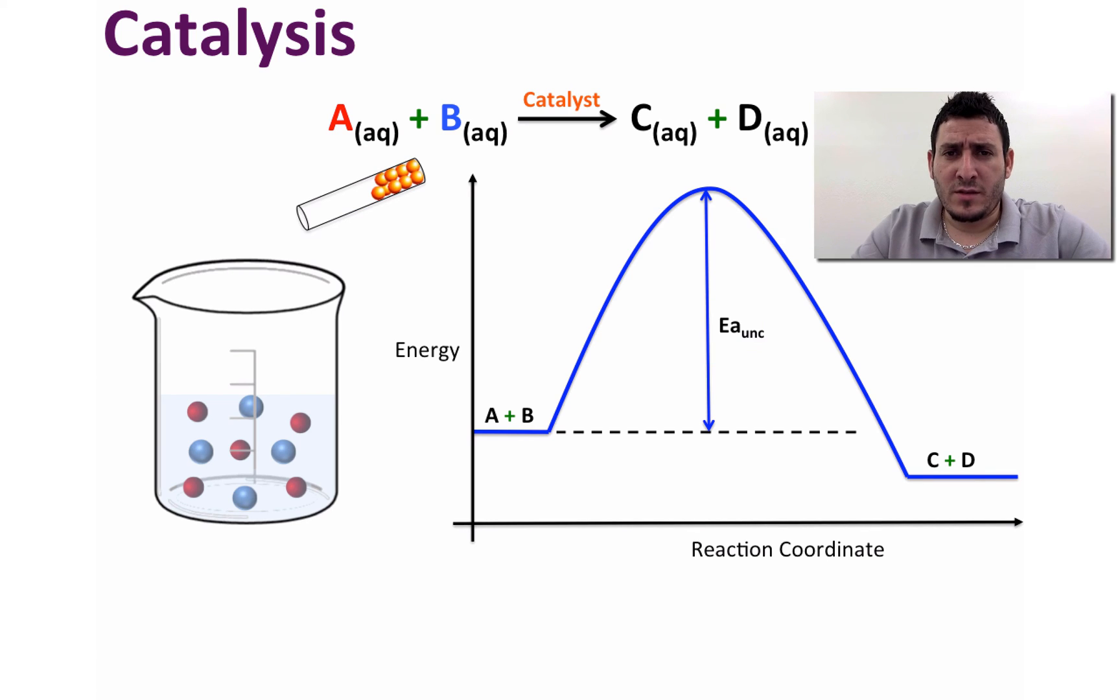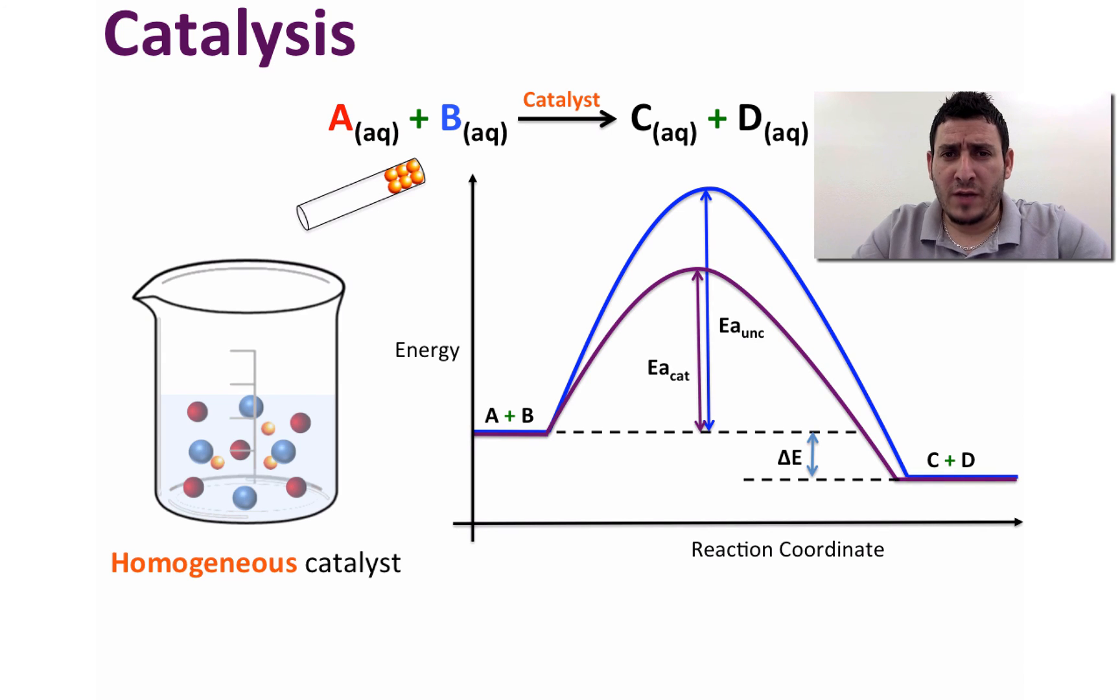Adding a catalyst to this reaction will result in speeding up the reaction rate and this is mainly due to decreasing the activation energy of this reaction and therefore the fraction of collisions with enough energy to overcome the activation energy will become greater.